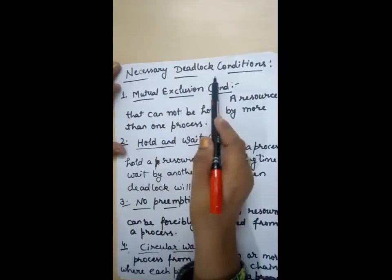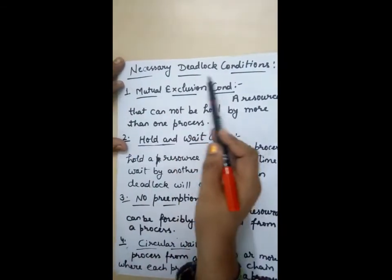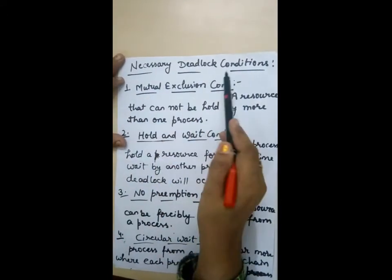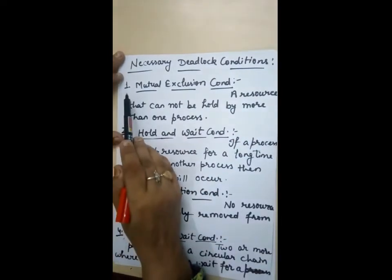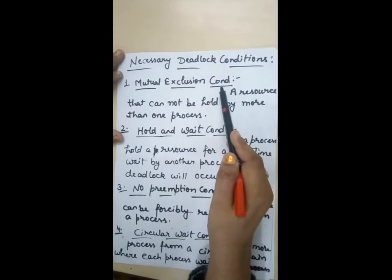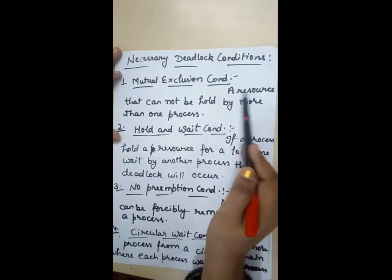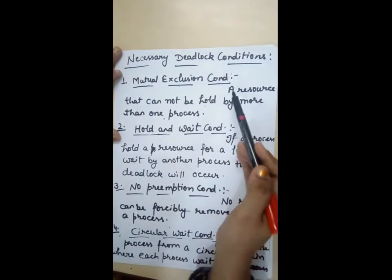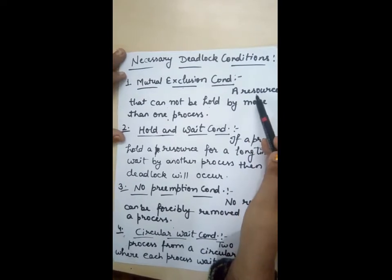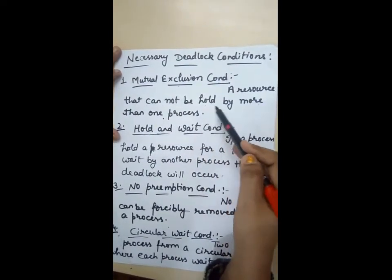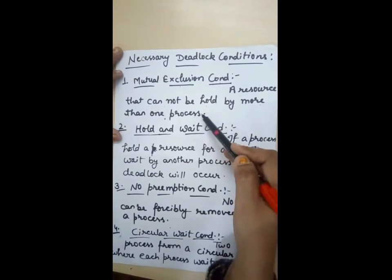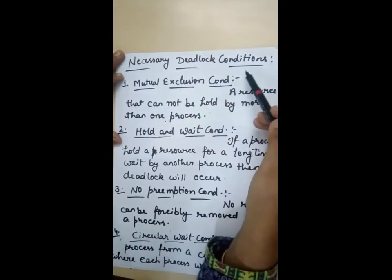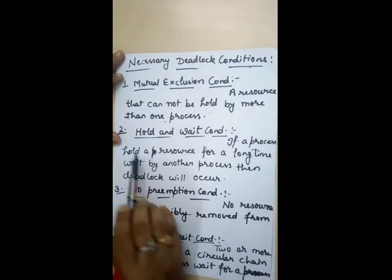Now we will look at the conditions for deadlock. The first condition is mutual exclusion. Mutual exclusion means a resource cannot be held by more than one process. When a resource is being used by only one process and not shared, the other process cannot get that resource — so deadlock will occur.